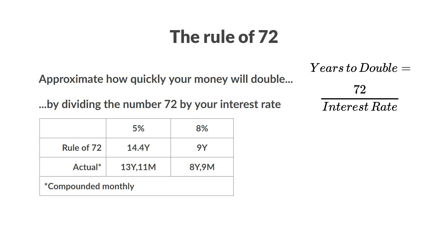The rule of 72 approximation is 14.4 years. And after 8 years and 9 months, $1,000 turned into $2,009.08 compounded monthly at 8%, while the approximation is 9 years. Since compounding monthly results in a slightly higher effective rate, making the period a bit shorter, this actually shows that the rule of 72 is a pretty good and reliable quick approximation.